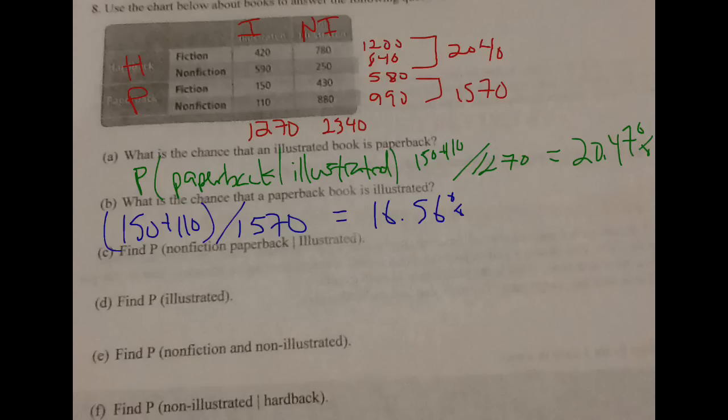Part C, I need the total number of nonfiction paperback given illustrated. I need the total number of illustrated, which is going to be my 1270. So I get 1270 in the bottom. And then, within that category, I want to know which ones are both nonfiction and paperback. I'm looking at this category. Here's my nonfiction, and that's paperback as opposed to nonfiction and hardcover. So I'm using the 110. So I divide 110 by that, I get 8.66%.